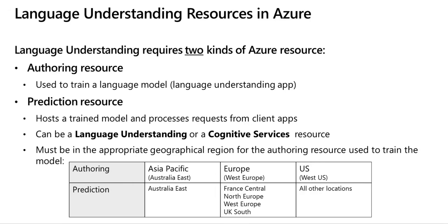For language features that require a model for prediction, you will need to build, train, and deploy that model before using it to make a prediction. This building and training will teach the language service what to look for. To create your language resource in the Azure portal, click on 'New Resource', then find and select 'Language Service', and then click on 'Create'.